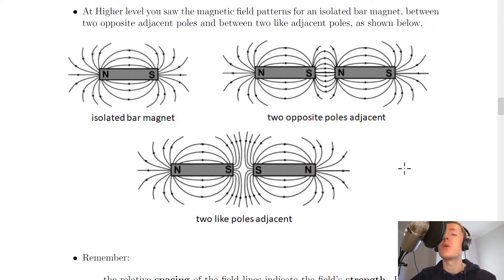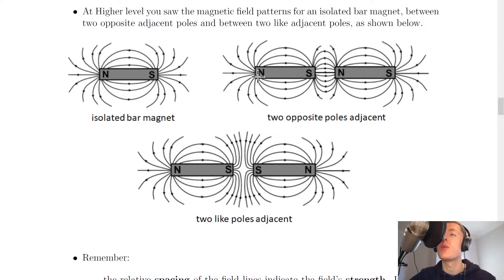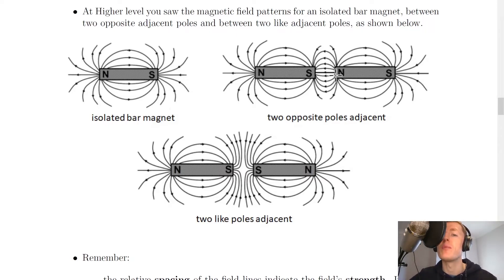For two opposite poles next to each other, each bar magnet has its own north and south poles. We see a similar thing to the isolated bar magnet where the field lines are curved from north to south, going out of north and into south at either side. However, the bit in the middle is the new part where we've got the field lines going from north to south with a straight line in the middle, then they start curving round, going out of the north pole and into the south pole.